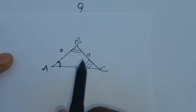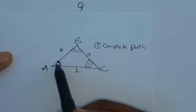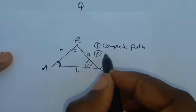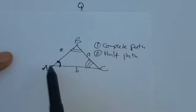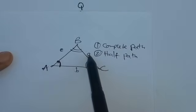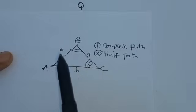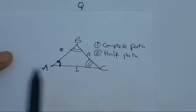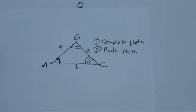For you to use the sine rule, number one, you are supposed to have a complete path. When you have a given angle and the given side opposite to that angle, we call this a complete path. Number two, you should have a half path — either a given angle with a missing side, or a given side with a missing angle. These conditions must both be satisfied to use the sine rule.